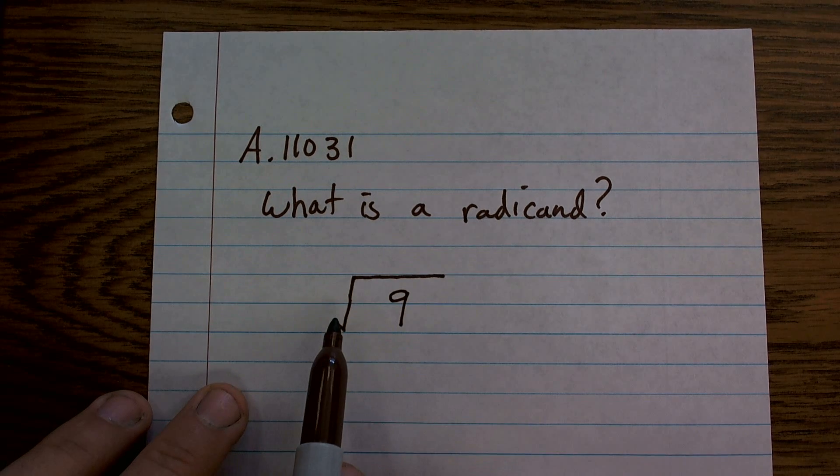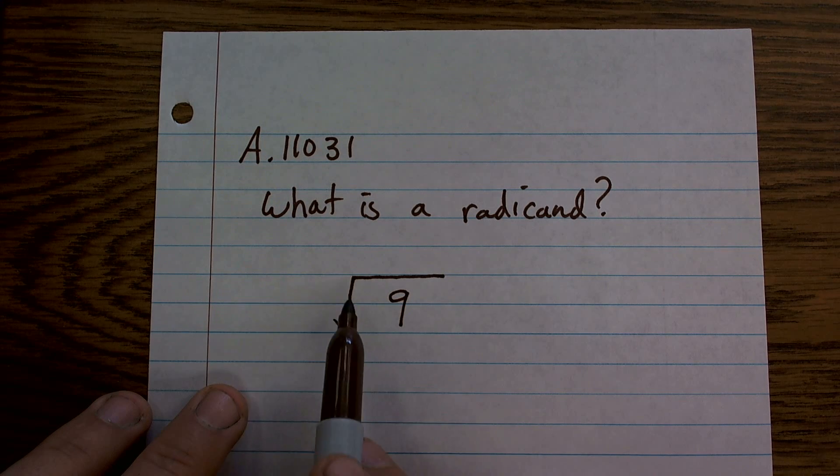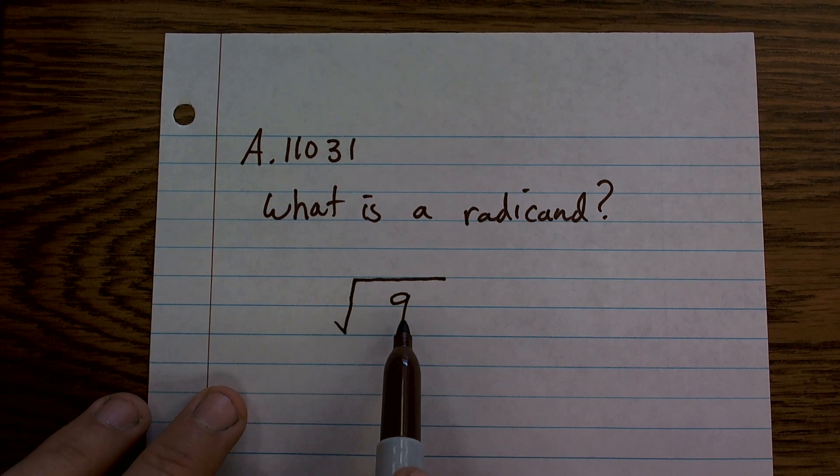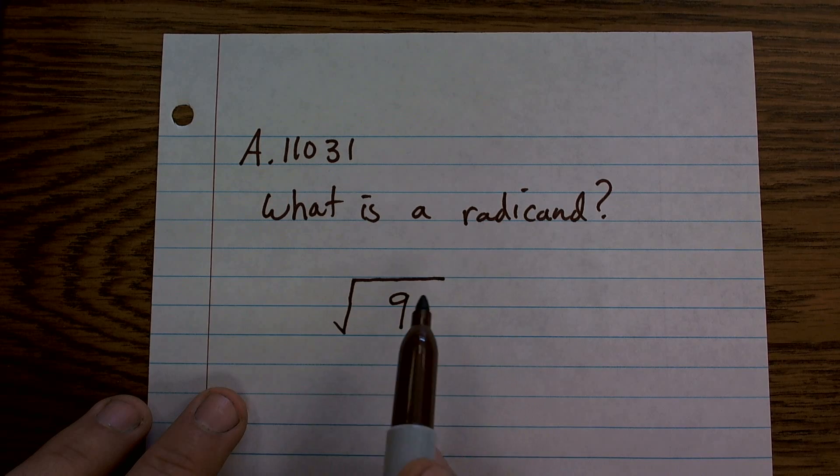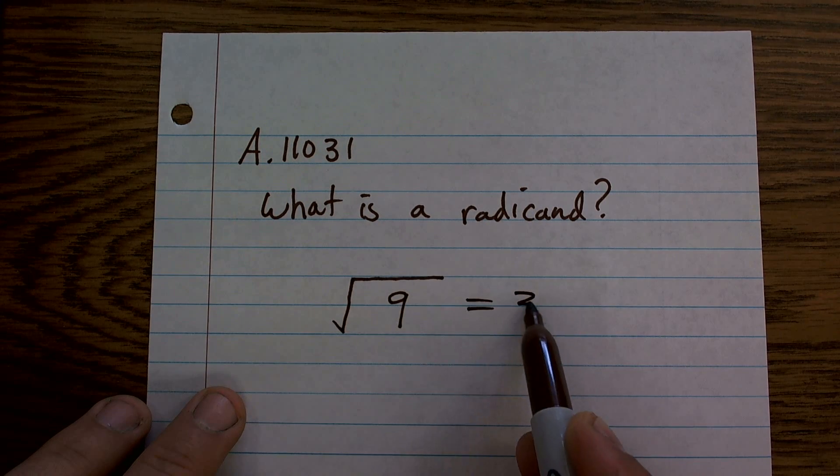So here, the square root means I'm going to take the square root of my radicand 9, meaning what number multiplied by itself equals 9. So the answer for this is 3.